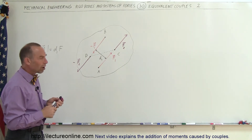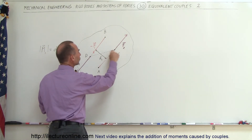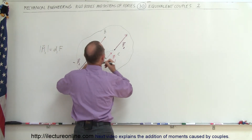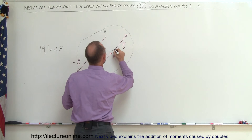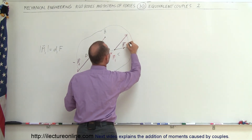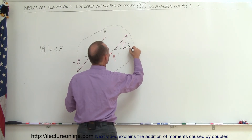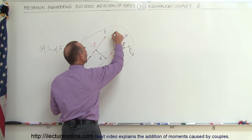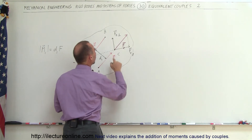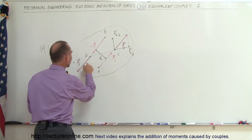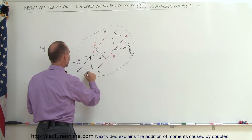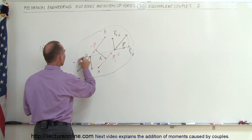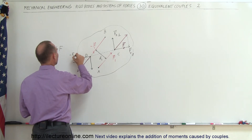Now, what if I draw the components that are perpendicular to the line connecting these two, and parallel to the line connecting these two? I'll draw the two components: the component of F2 parallel along this line, and then the component which is perpendicular — that would be F2 perpendicular to the line connecting F2 and negative F2. I do the same on the other side: the component of negative F2 perpendicular to the line connecting the two, and the component of negative F2 parallel.